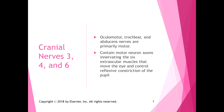Cranial nerves three, four, and six — the oculomotor, trochlear, and abducens nerves — are all involved in eye motions. There are three entire cranial nerves devoted to eye movements, which highlights how important this system is. They are primarily motor in function, containing motor neuron axons innervating the six extraocular muscles that move the eye and control reflexive constriction of the pupil. If you lost function in one, you would still have some eye movement.